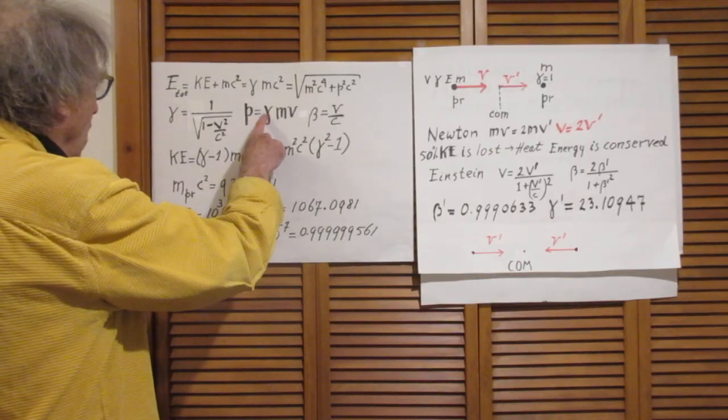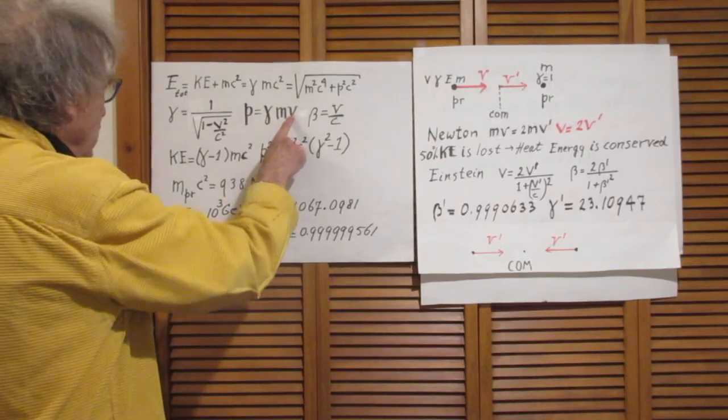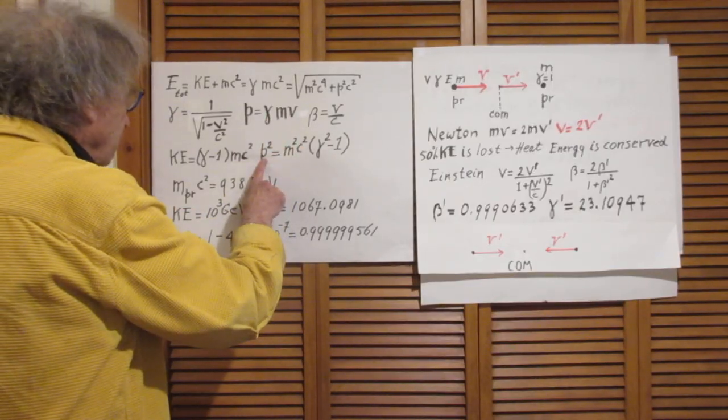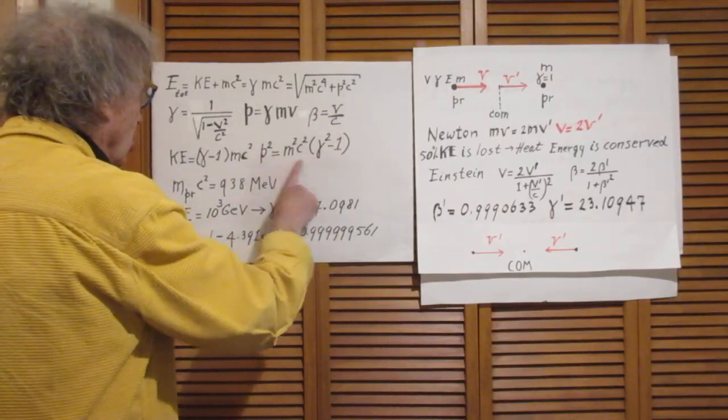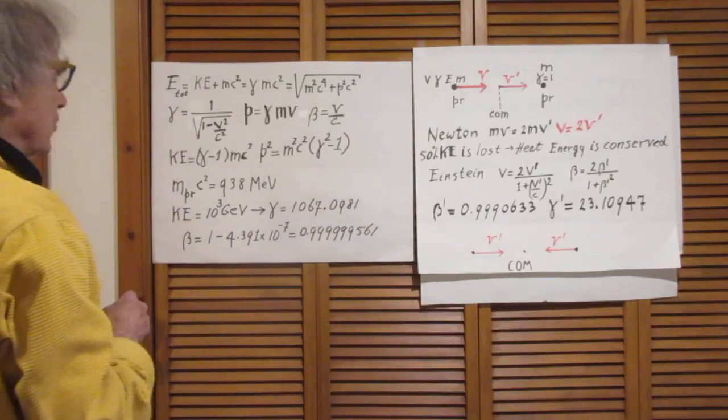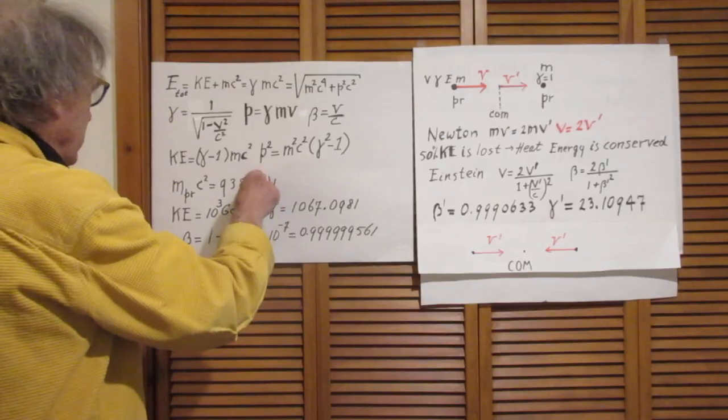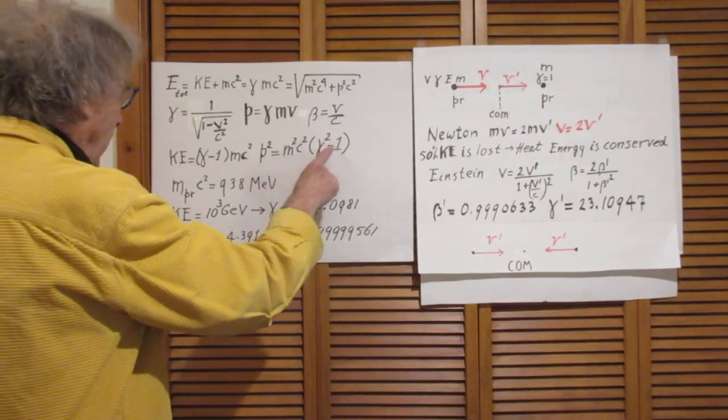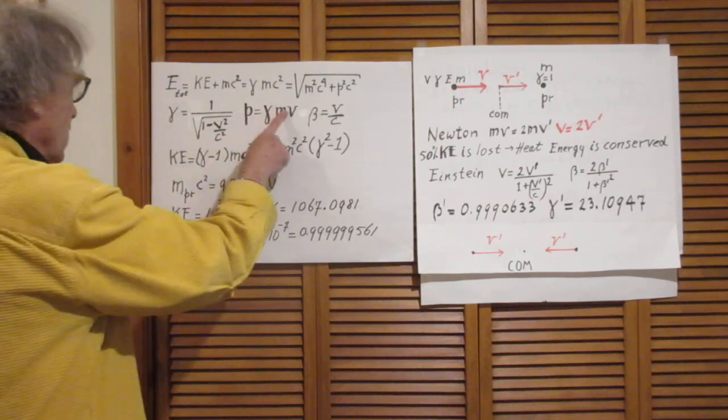If you put gamma in here, then you can solve, you can express P² in a new form. It takes you perhaps one minute of algebra and you can show then that P² is also M²C² times (γ² - 1). So we have to combine this with this.